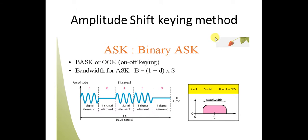Amplitude Shift Keying (ASK) method — the name tells us it is related to amplitude. We are doing digital-to-analog conversion. Digital data means binary digits 0 or 1, and analog data means a sine wave or cosine wave.